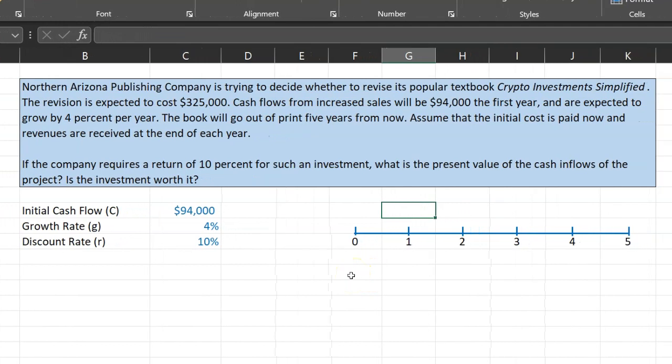Now, one way to do this question is to actually draw out a timeline and on that timeline show the different cash flows that you're going to get at different points in time. So here you are at time period zero. At the end of time period one, you are expecting $94,000.